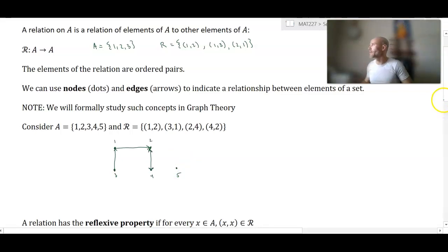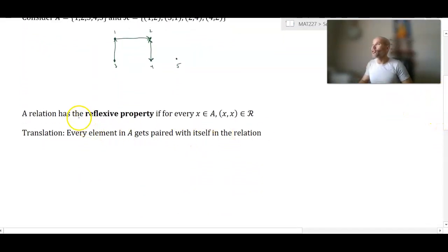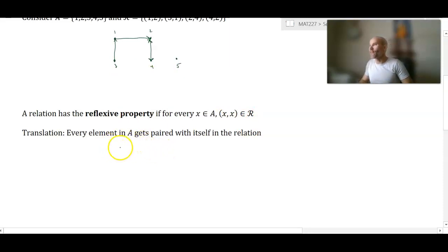A relation has what we call the reflexive property — it has reflexivity — if for every element in A, that element is paired with itself. So every element in A gets paired with itself in the relation. What would that look like? Using the same set A, let's create a new relation.